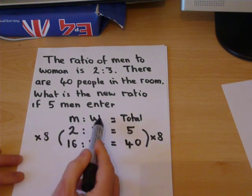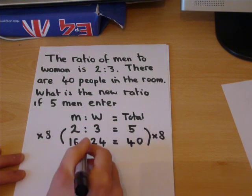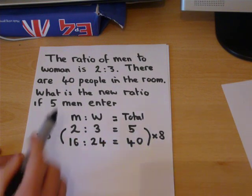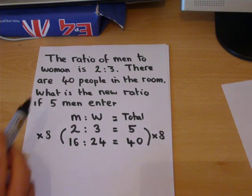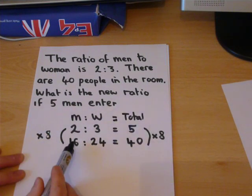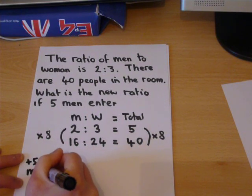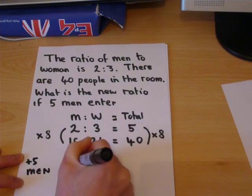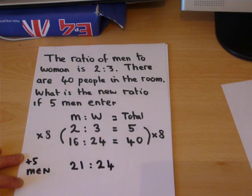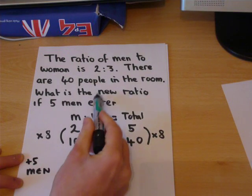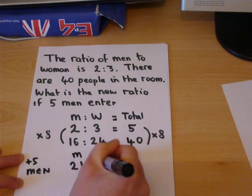So the ratio of men to women in its highest form, rather than its lowest form, is 16 to 24. But 5 men enter the room. So if 5 more men enter, rather than 16 men, if we add 5 men, there will now be 21 men, but still 24 women. So this is the new ratio of men to women.